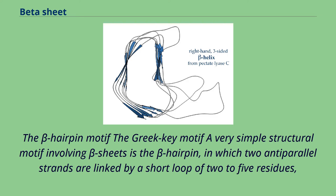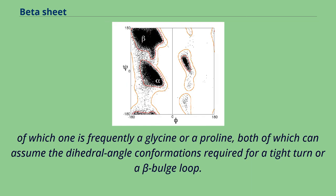The beta hairpin motif. The Greek key motif. A very simple structural motif involving beta sheets is the beta hairpin, in which two anti-parallel strands are linked by a short loop of two to five residues, of which one is frequently a glycine or a proline, both of which can assume the dihedral angle conformations required for a tight turn or a beta bulge loop.